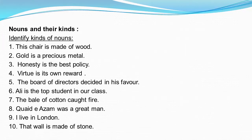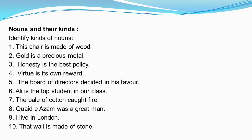Collective noun is used to name a group of places, animals, persons, or things. Like an army of soldiers, a class of students, flock of sheep, band of musicians. Here army, class, flock, and band are collective nouns. And now material noun — it denotes the matter or substance of which things are made. Like gold, silver, stone, brick, wood, cotton. All of these are material nouns.